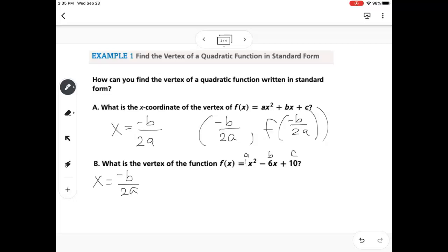So since b in this equation is already negative, a negative negative turns positive. So this will be positive 6 over 2 times my a, which is 1. So this would be 6 divided by 2. So my x-coordinate is 3.